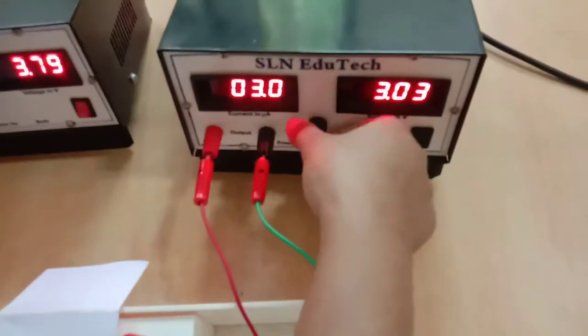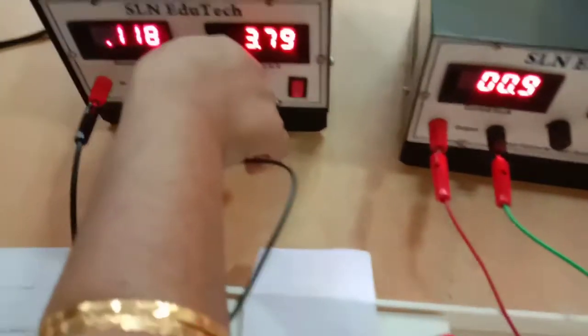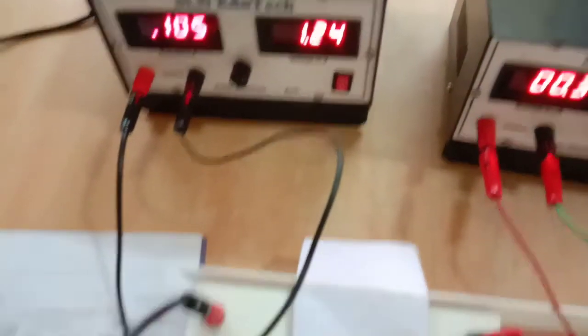This is what's called the study of reverse bias characteristics of a given photodiode. Now moving to the second part. For that, what I do is I will minimize the knob on iris first.